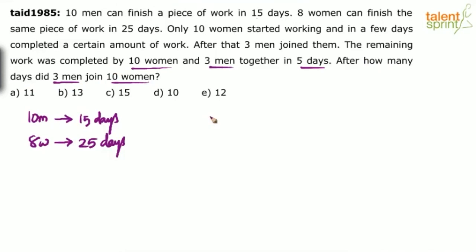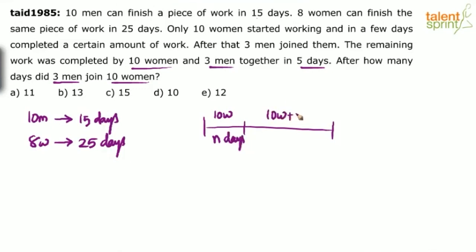For the first few days there were only 10 women — let's say they were there for n days. After that, 3 men joined them and they completed the remaining work in 5 days. Usually the amount of work completed is given to us, but here that's not given. It only says that 10 women started working and in a few days completed a certain amount of work, but exactly how much is not known.